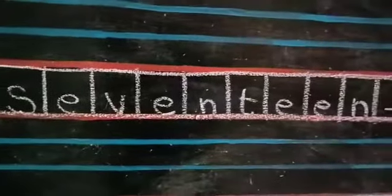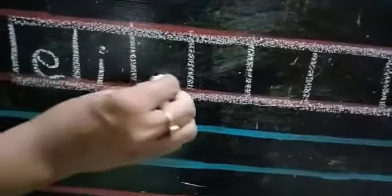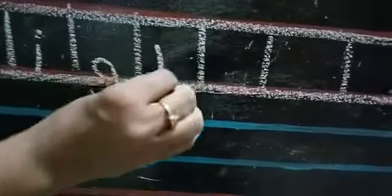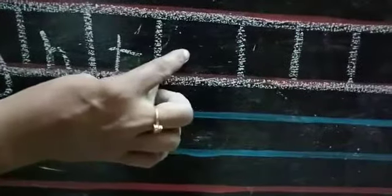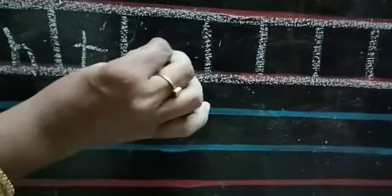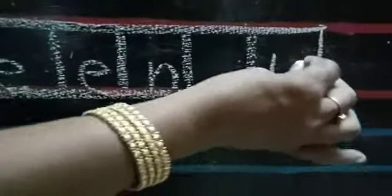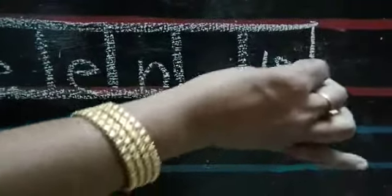After seventeen comes eighteen. Eighteen. Children, be careful. There should not be two T's. E-I-G-H-T. Eight. Then you should not start with T-E-E-N — leave T, write only E-E-N. 1-8, eighteen.